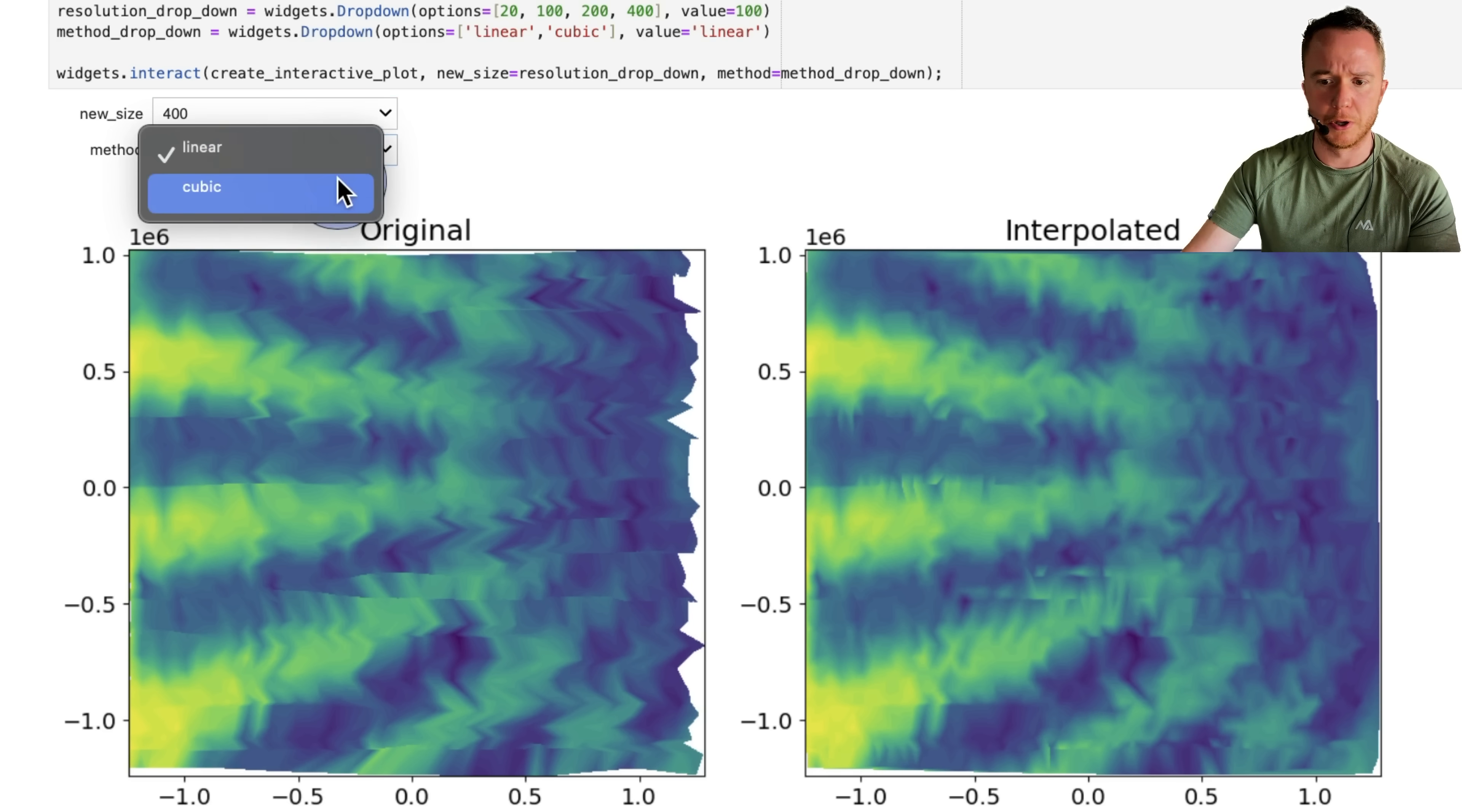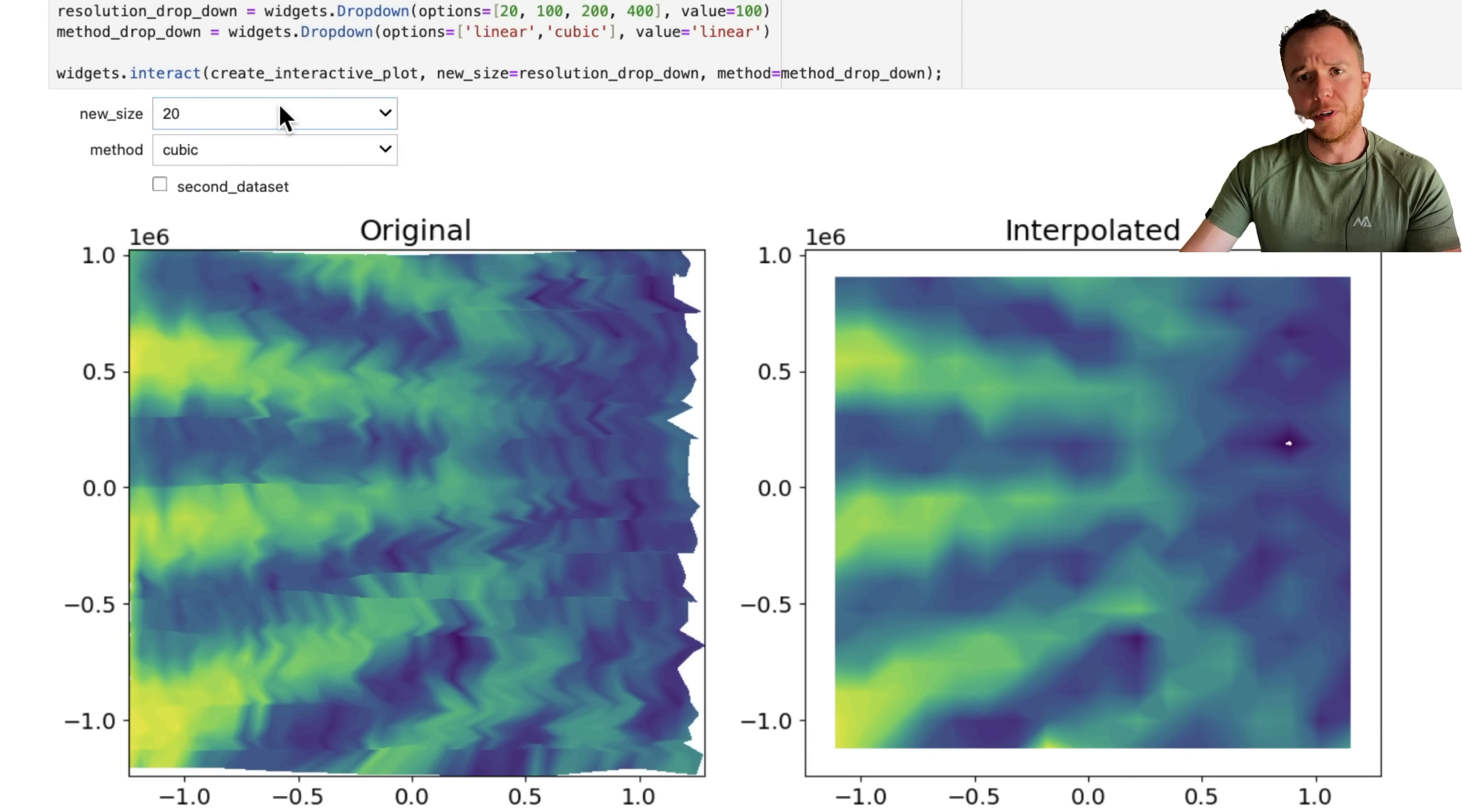We can switch the interpolation method from linear to cubic. And see also here, we get the holes, and the only thing we see here is that if we go down in the number of points, then the holes get smaller. So if you're motivated to fix it, this would be something to try.